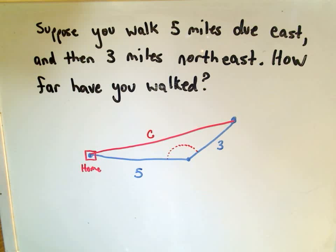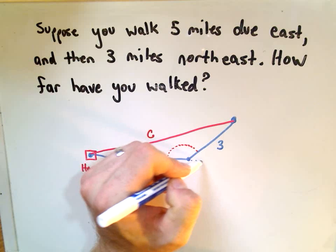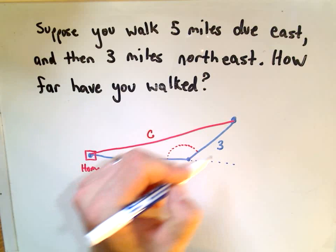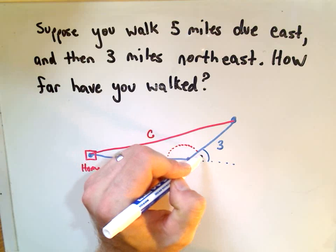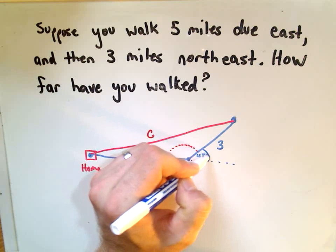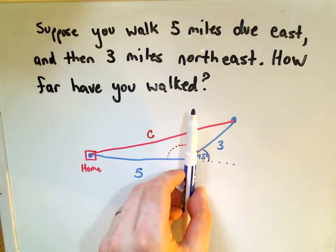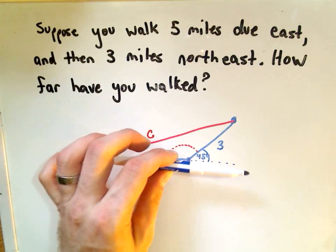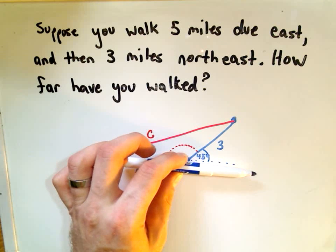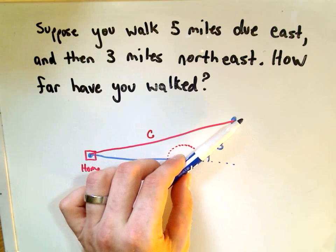If you go northeast, you're basically making a 45 degree angle. If you go due north, that would be 90 degrees. If you kept going east, it would be 0 degrees, you wouldn't change. So if I go northeast, I'm going to change by 45 degrees.